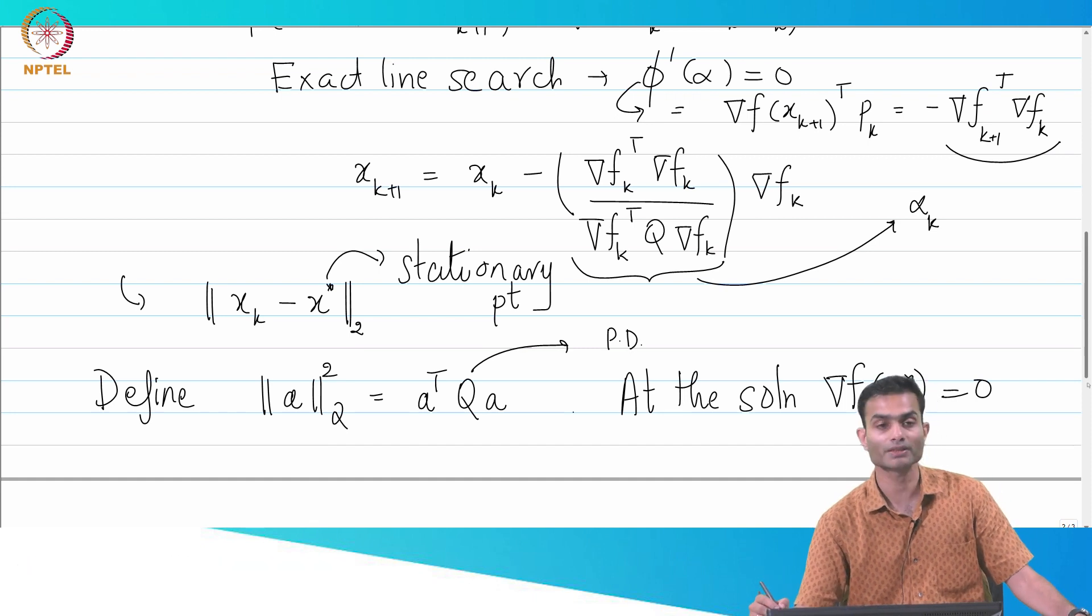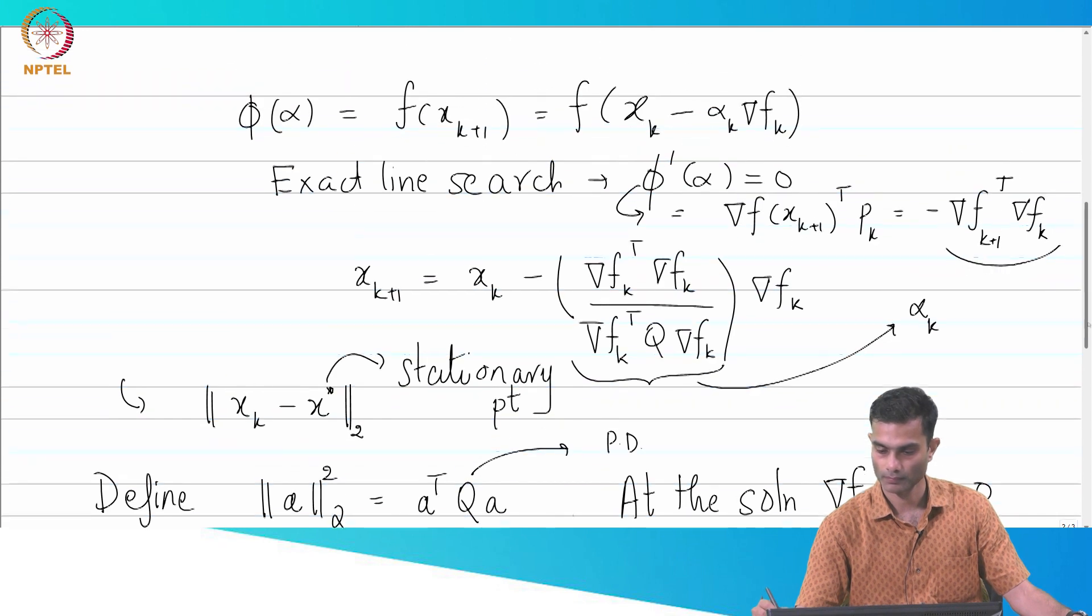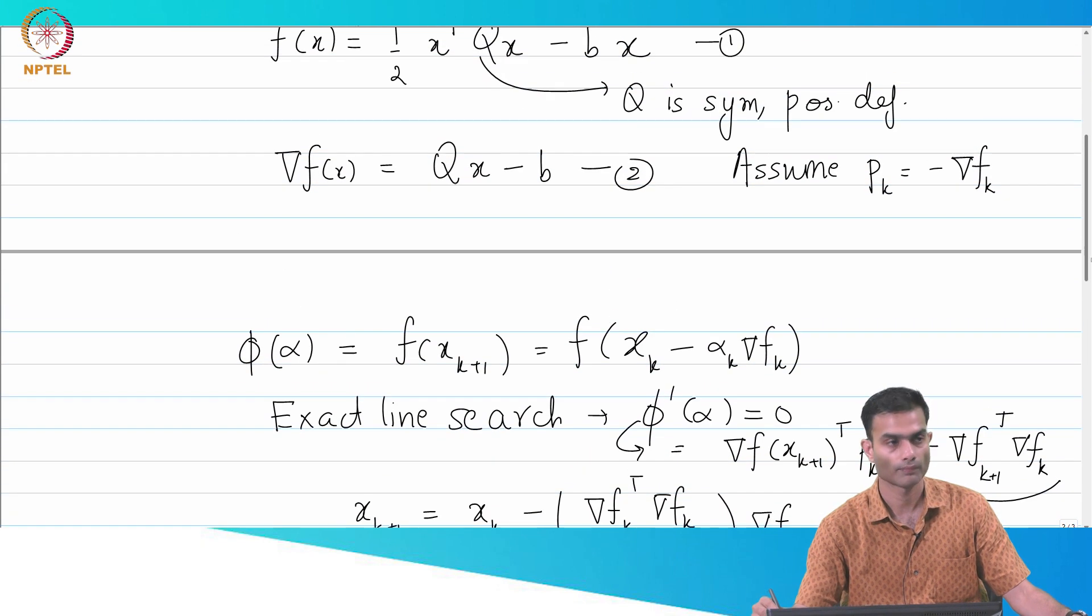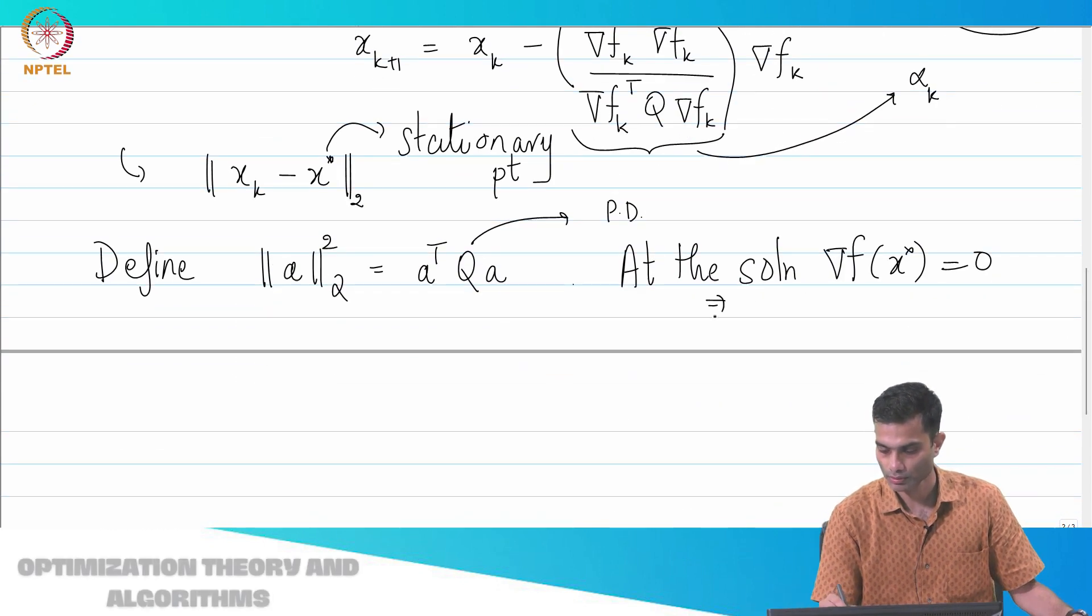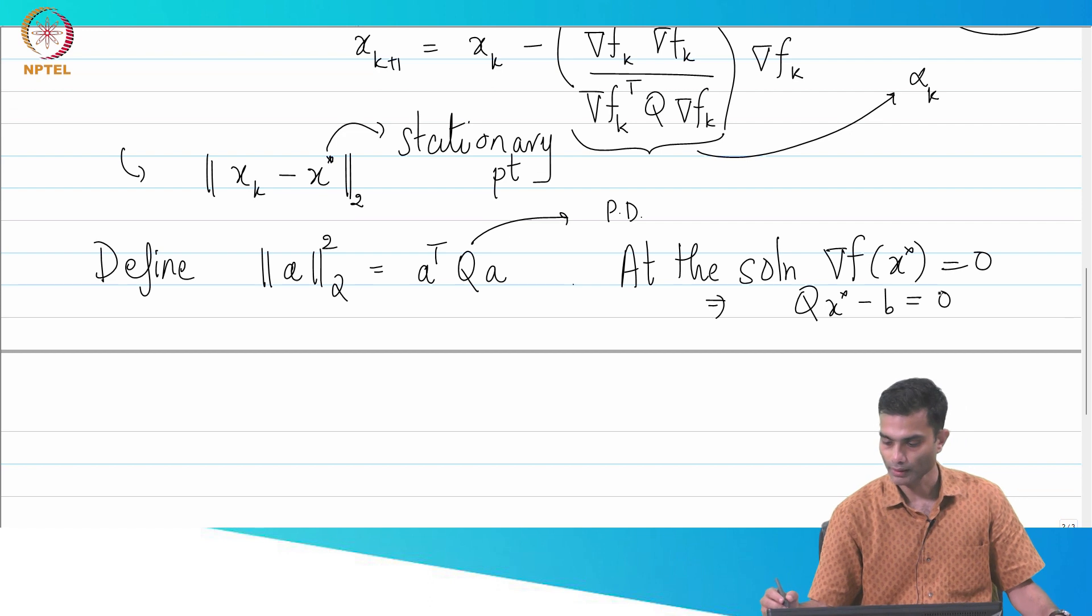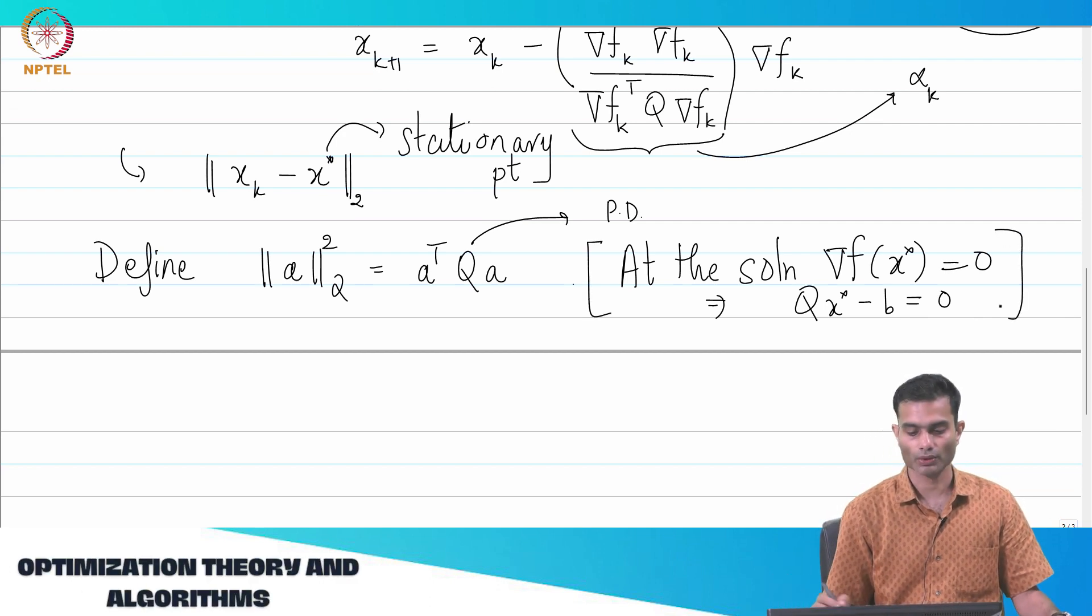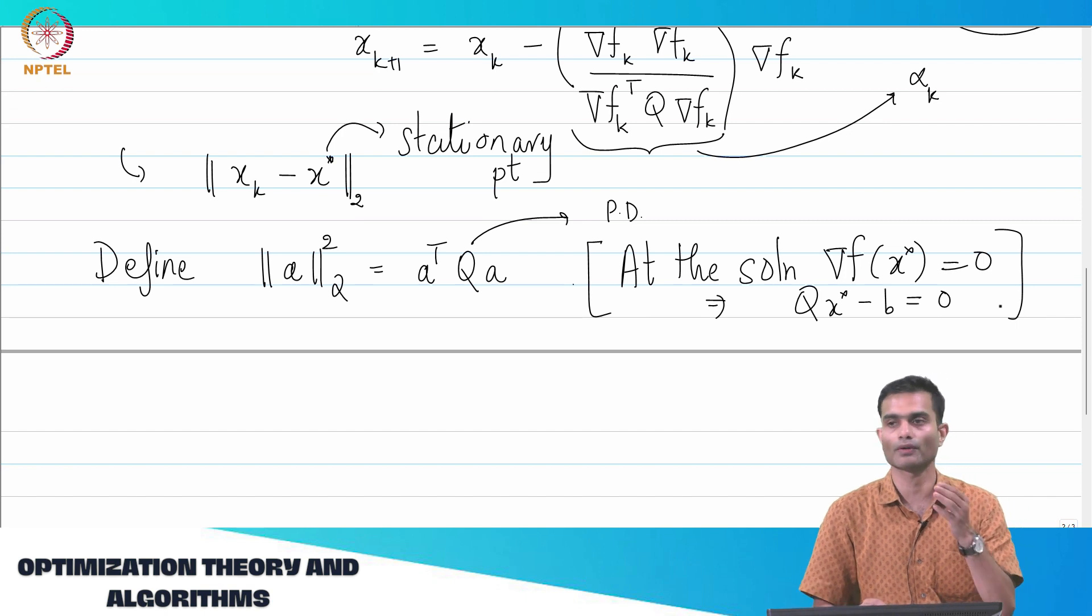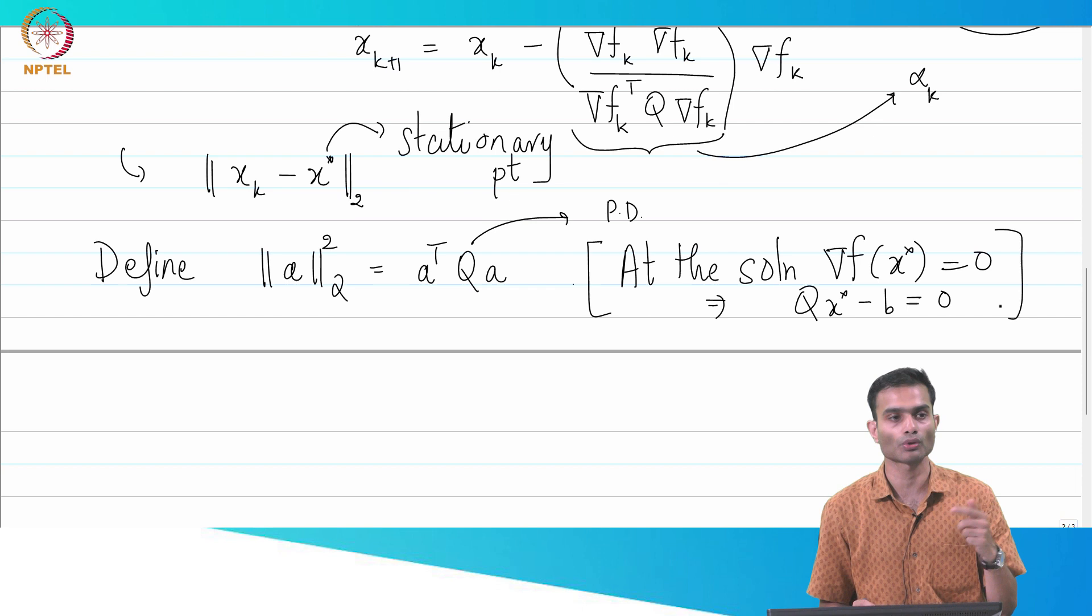Do I have an explicit expression for grad f? We do, right? It's simply Q x minus b. So Q x star minus b is equal to 0. So this is just an aside that we will use. Now, let's get back to what we are interested - what is the distance of the iterate from the solution? But we are going to use the Q norm instead of the true norm.